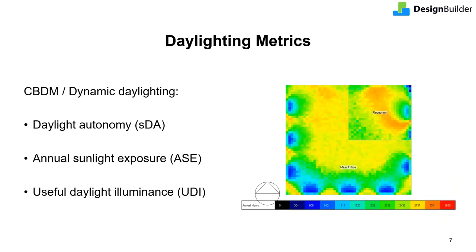For annual daylighting, three metrics are calculated. Spatial Daylight Autonomy (sDA) assesses for what percentage of occupied hours in a year minimum required lighting levels are achieved. Annual Sunlight Exposure (ASE) assesses if the space receives too much direct sunlight, as that can cause visual discomfort. Finally, Useful Daylight Illuminance (UDI) tracks the percentage of occupied time when daylight levels are within a specified range — neither too high nor too low. In a way, a single UDI metric can summarize the overall daylight performance of a space.